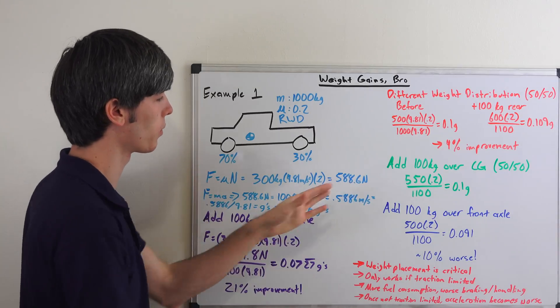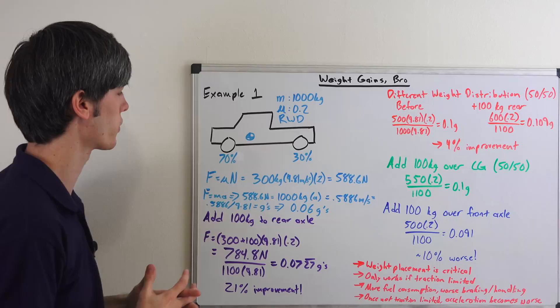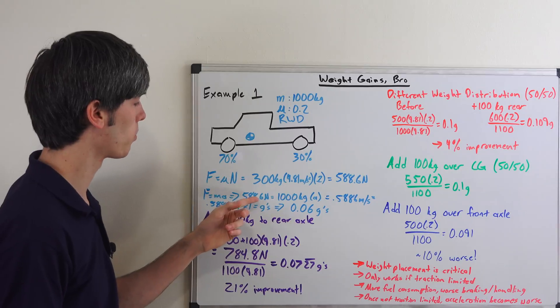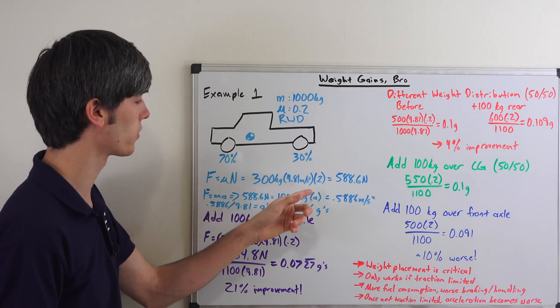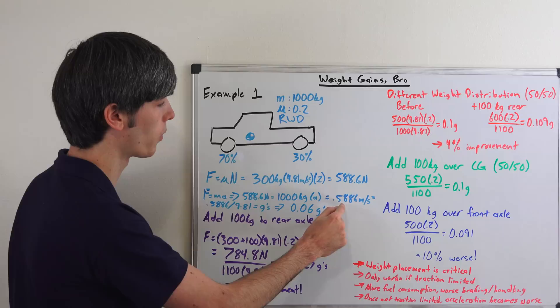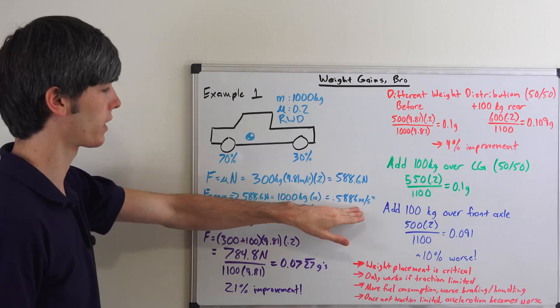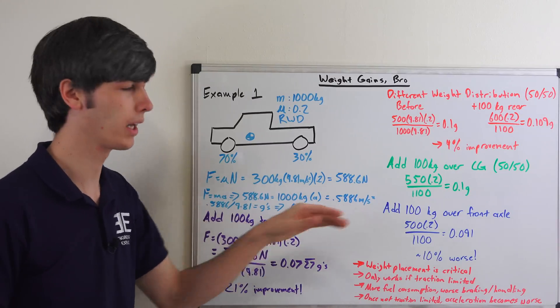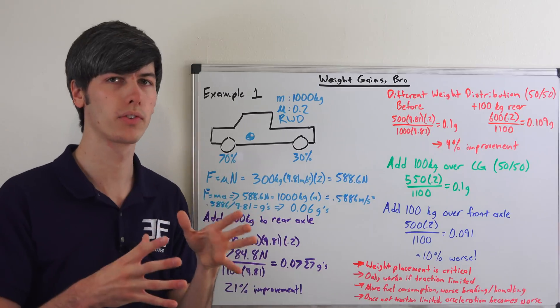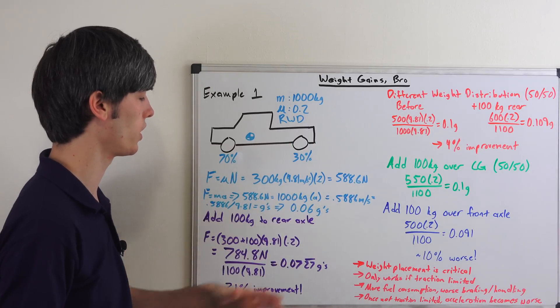So let's get this into something that we can understand better because accelerating with 588.6 newtons doesn't really mean too much to us. So let's use the equation force equals mass times acceleration. 588.6 equals a thousand kilograms times acceleration. 588.6 divided by a thousand gives us 0.5886 meters per second squared. Still I'm not really familiar with what that's going to feel like. So let's divide this by 9.81 and that gives us 0.06 g's.